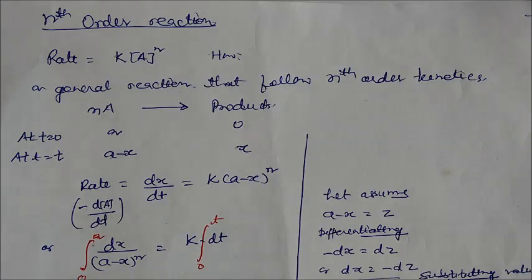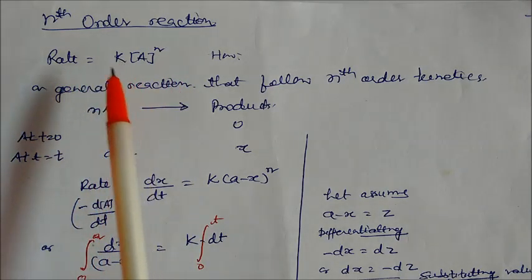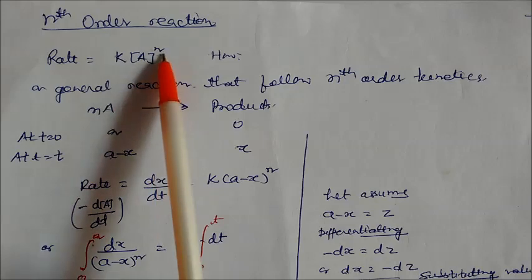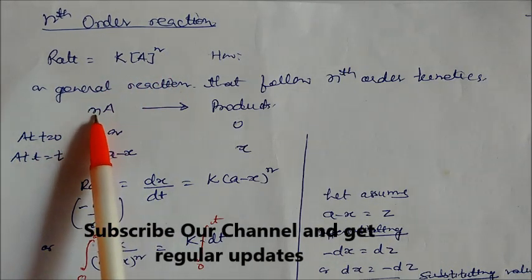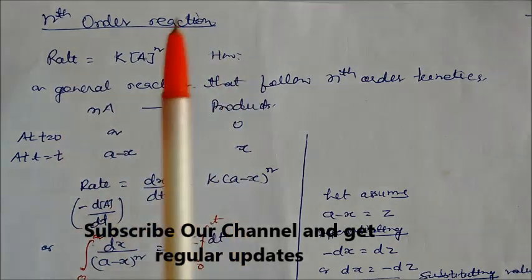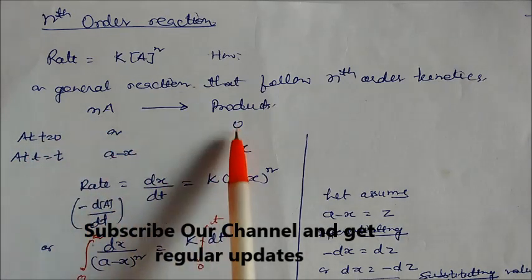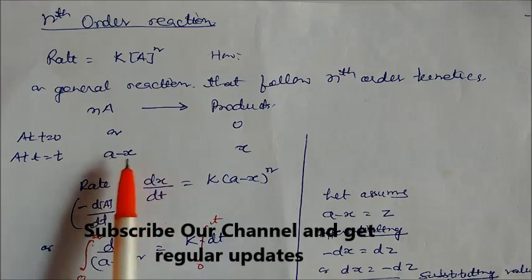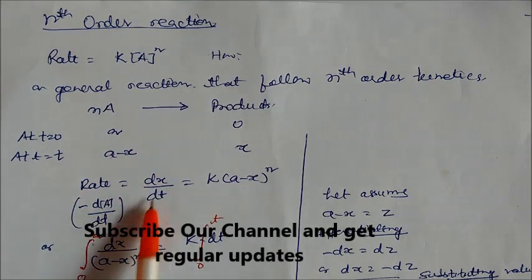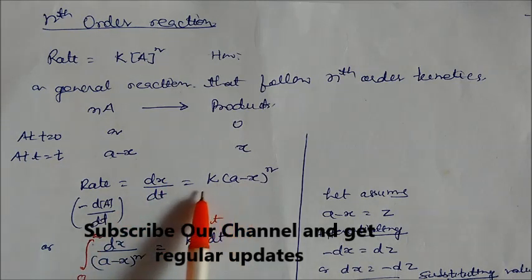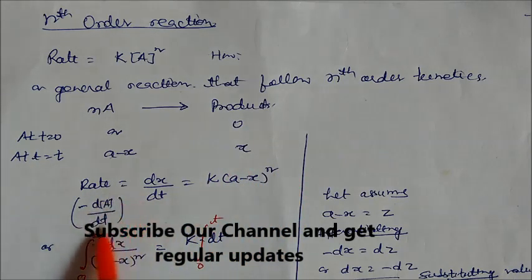In this session we will study the nth order of the reaction. The rate is equal to k times concentration to the power n. If you take a reactant with stoichiometric coefficient n giving product, you can write the rate in this form. At initial when t is equal to 0, concentration is a₀, and after some time it becomes a minus x. Rate equals dx/dt, written as k into (a minus x) to the power n.